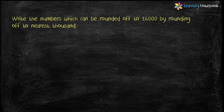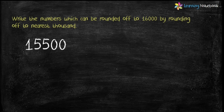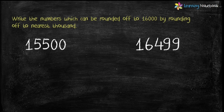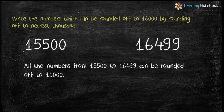Now let's do a question: write the numbers which can be rounded off to 16000 by rounding off to the nearest 1000. We have to find the numbers using Step 1 and Step 2. As per Step 2, the smallest number which can be rounded off to 16000 is 15500. As per Step 1, the greatest number is 16499. So all the numbers from 15500 to 16499 can be rounded off to 16000.